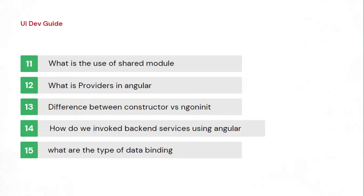They may give you a back-end URL and ask you to fetch data and display it in a table. They'll ask your approach, what model you'll use, and what dependencies you need. After creating the Observable and subscribing to it, a counter question is: instead of subscribing directly in the component, how can you use the async pipe instead?